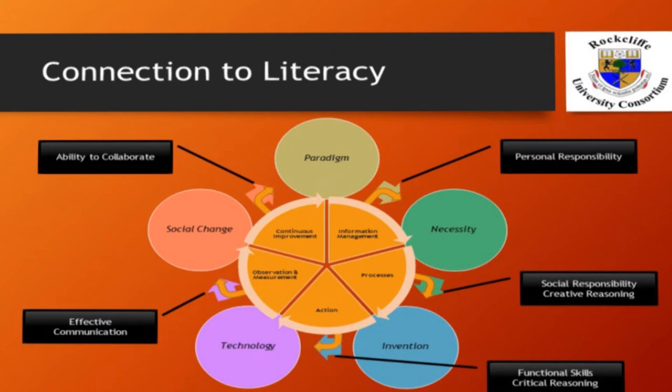In the fourth case, technology plus observation drives social change in the presence of effective communication. In order to drive social change, the technology needs to be effectively communicated in terms of education, skills, investment, and other hurdles that may prevent others from taking advantage of the new solutions. And finally, social change plus continuous improvement drives new paradigm in the presence of collaboration. Paradigm exists where there is a large enough culture of people who adopt the new technology and then create a bond through symbolism, language, cultural tradition, and collective expression.